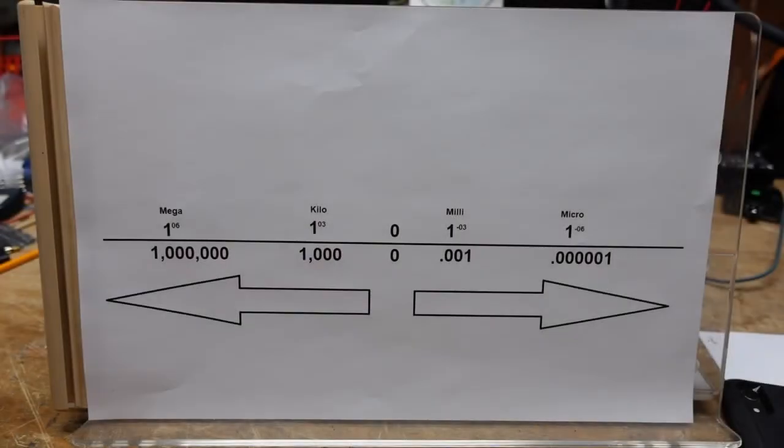All right, since we're going to be dealing with some very large and very small numbers as we start to explore Ohm's Law, it's helpful for us to understand the metric system that's used for some of these values. Now since computers have become so popular, a lot of us are familiar with terms like kilobyte or megabyte. The kilobyte is a thousand bytes and megabyte is a million.